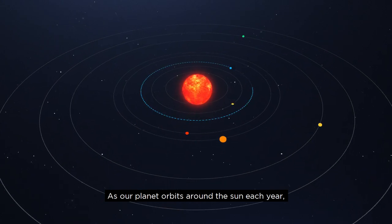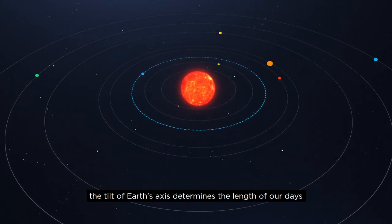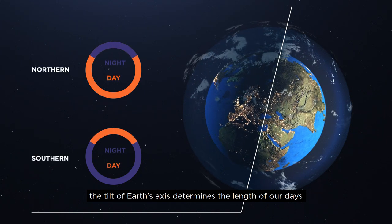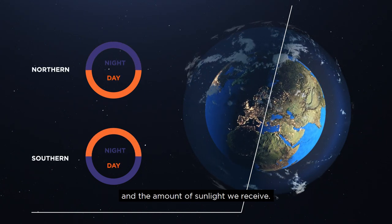As our planet orbits around the Sun each year, the tilt of the Earth's axis determines the length of our days and the amount of sunlight we receive.